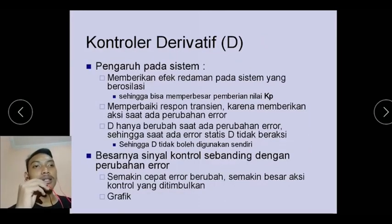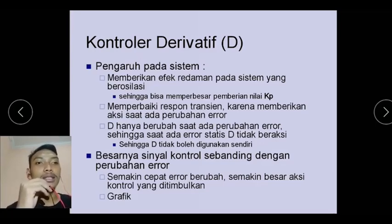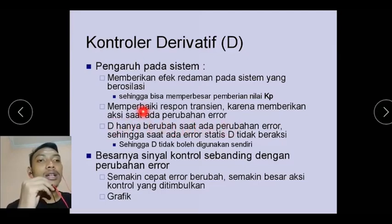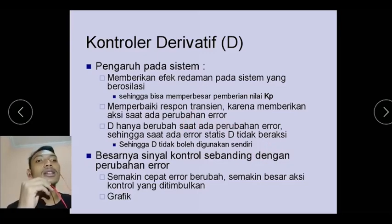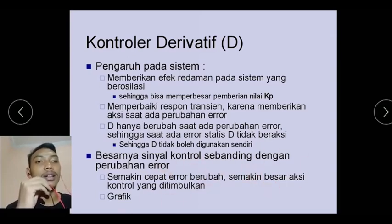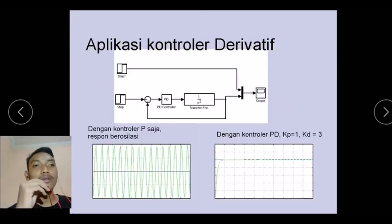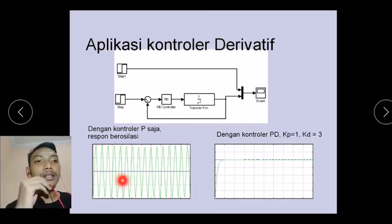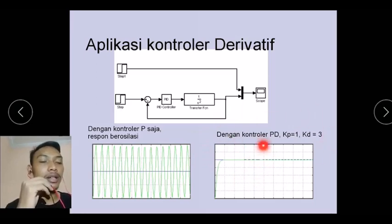Yang ketiga adalah controller derivative atau controller D. Pengaruh pada sistem: akan memberikan efek redaman pada sistem yang berosilasi sehingga bisa memperbesar pemberian nilai K_P, memperbaiki respon transient karena memberikan aksi saat ada perubahan error. D hanya berubah saat ada perubahan error, sehingga saat ada error statis D tidak beraksi, sehingga D tidak boleh digunakan sendiri. Aplikasi controller derivative: grafik pertama menggunakan controller P saja responnya berosilasi, sedangkan grafik kedua menggunakan controller PD dengan K_P=1 dan K_D=3, grafiknya menunjukkan kestabilan.